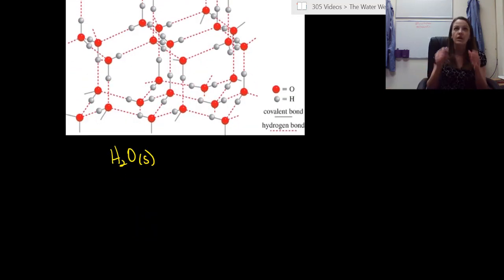This all has to do with hydrogen bonding. So because of hydrogen bonding, liquid water is heavier than solid water, which is why ice cubes float and which is why icebergs float. So think of the Titanic, right? That's why the iceberg floats.